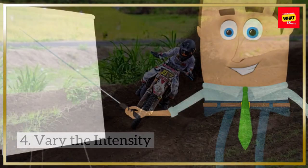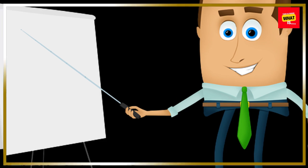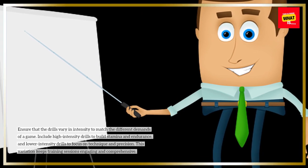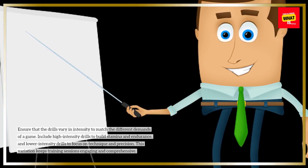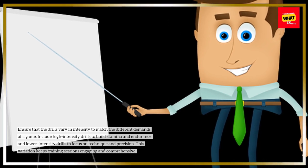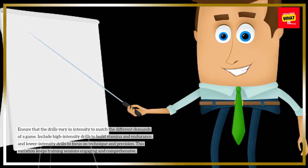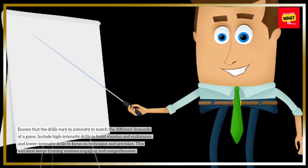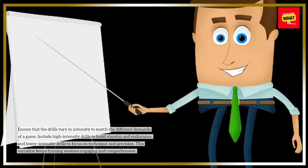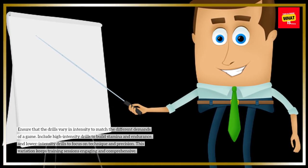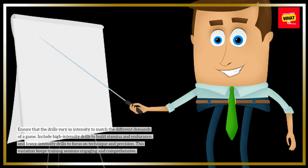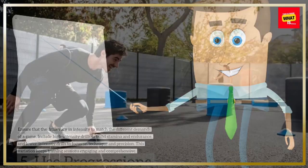Vary the Intensity. Ensure that the drills vary in intensity to match the different demands of a game. Include high-intensity drills to build stamina and endurance, and lower-intensity drills to focus on technique and precision. This variation keeps training sessions engaging and comprehensive.